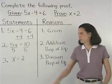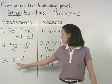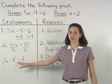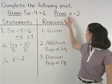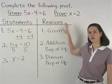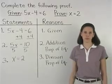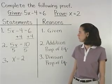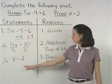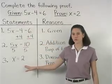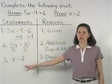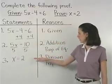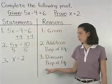Notice that in our statements column, we now have x equals 2, which is what we set out to prove. So we have completed our proof. Think of this proof as just a fancy way of solving an equation where we have to give a reason for each step along the way.